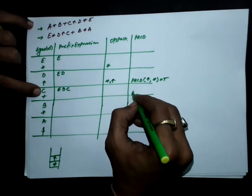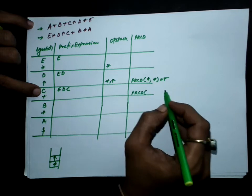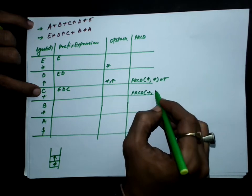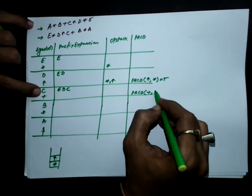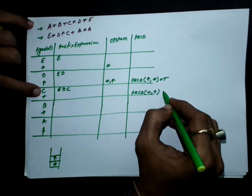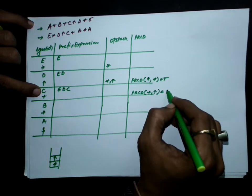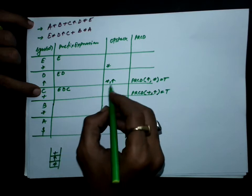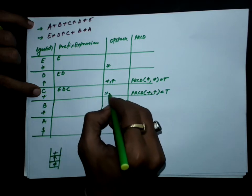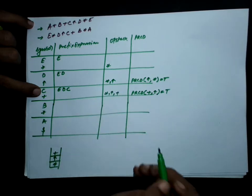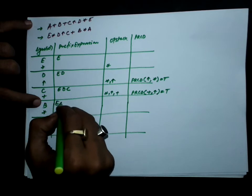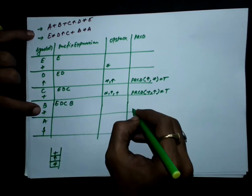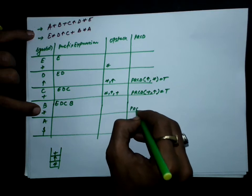C is an operand. Plus is an operator, so let's check the precedence. Precedence is checked for symbol (plus) over stack top (exponent), which is true. In case of true, we push, giving us e, d, c on the prefix so far, and then b is next.